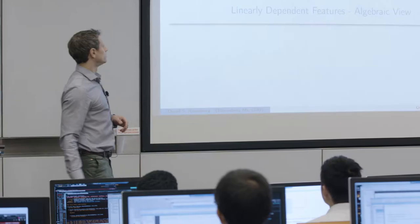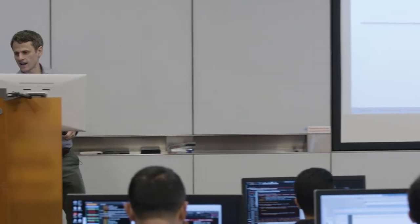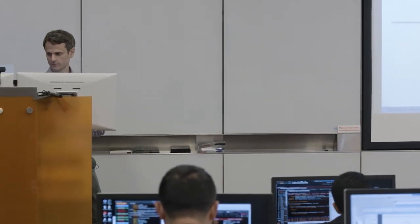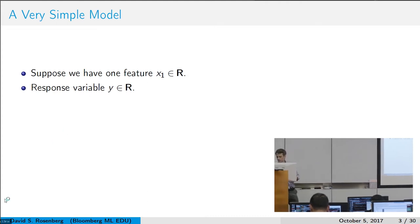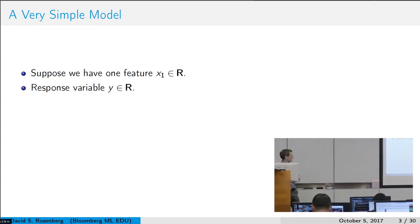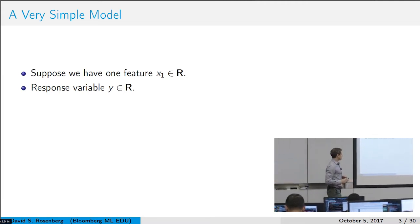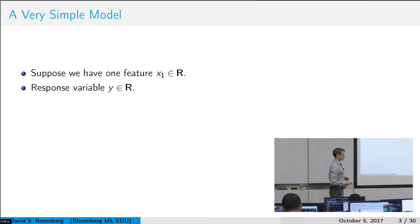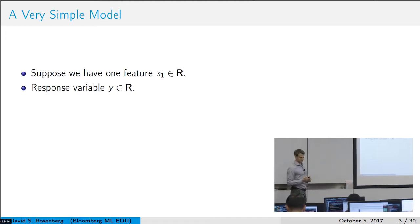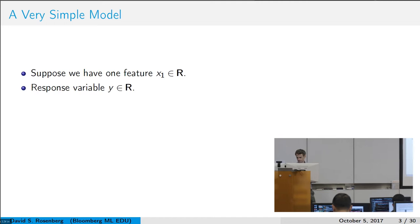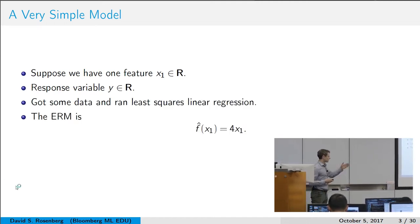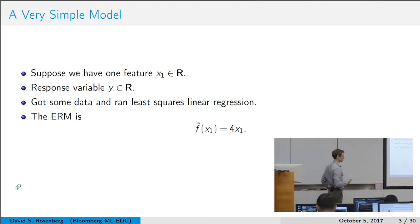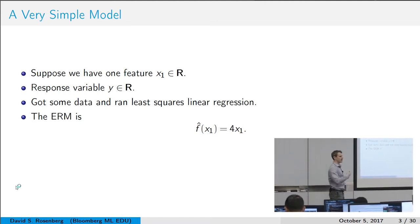The simplest version of that is, of course, exactly repeated features. So let's start with just one feature, x1. We have response variable y, and we fit linear regression — input space reals, output space reals. And we find the empirical risk minimizer is 4x1. That's our prediction function: input is x1, output is 4x1.